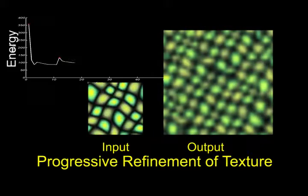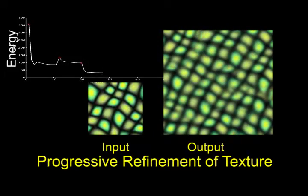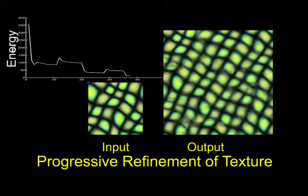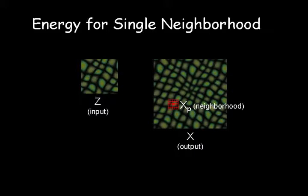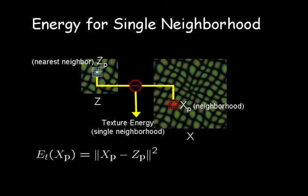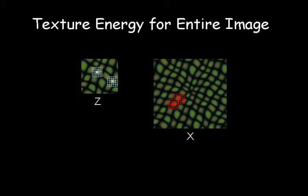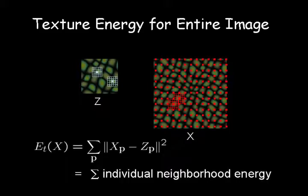Ours is an iterative algorithm in which the texture is progressively refined in a multi-resolution fashion. To define the energy of a single output neighborhood, we first find the neighborhood closest to it in the input texture. The energy is then the distance between these two neighborhoods. The total texture energy is the sum of individual neighborhood energies.